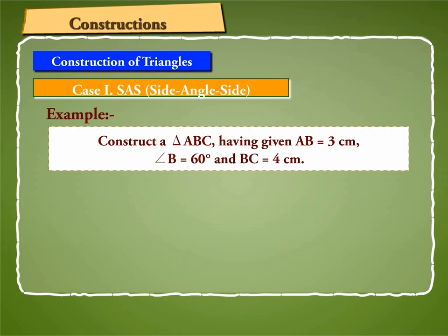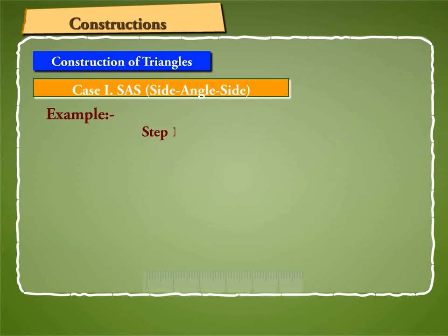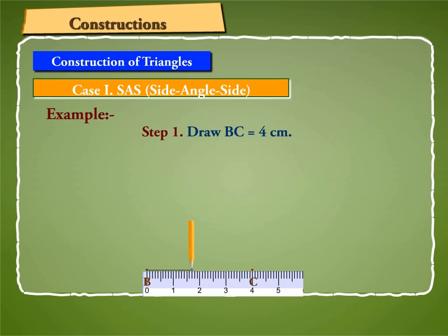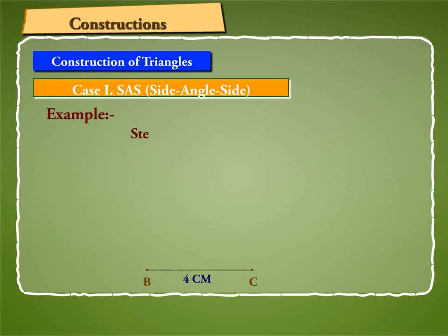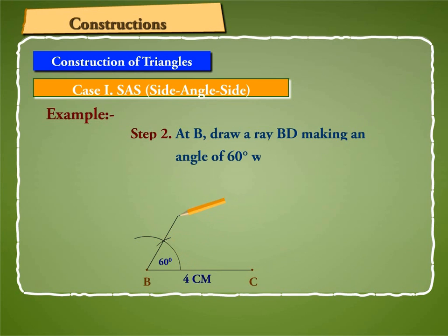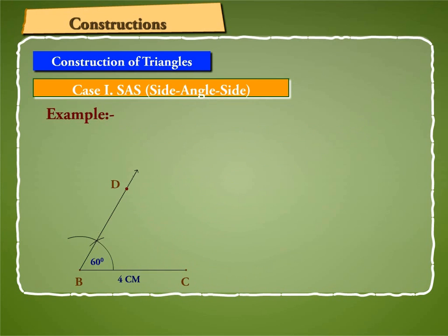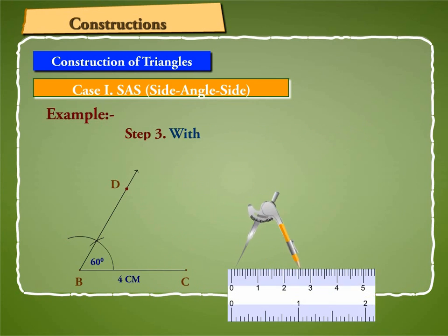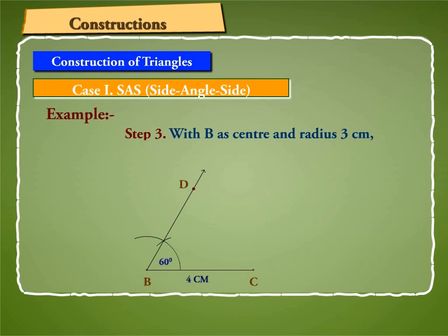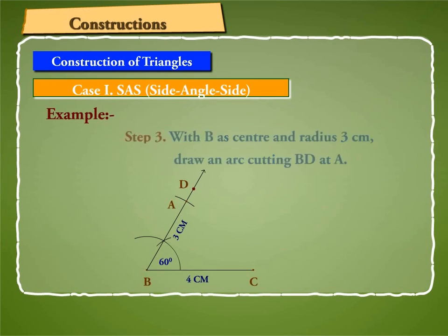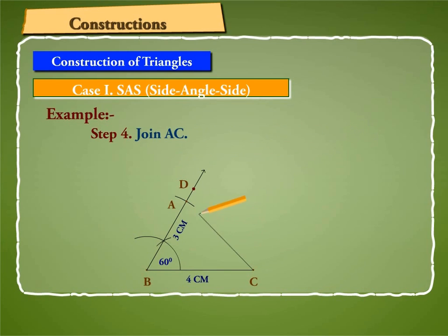We take the following steps. Step 1: Draw BC equal to 4 cm. Step 2: At B, draw a ray BD making an angle of 60 degrees with BC. Step 3: With B as center and radius 3 cm, draw an arc cutting BD at A. Step 4: Join AC. Then ABC is the required triangle.